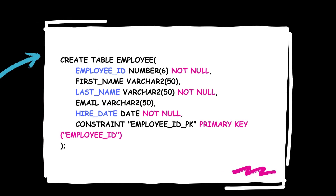We have a table in the database as shown here. Note that in this table, EmployeeId, LastName, and HireDate are not null fields. That is, a record cannot be inserted into this table if any of these field values are null. Also note that the primary key is defined on the field EmployeeId. Hence, no record with a duplicate EmployeeId field value can be inserted into this table.